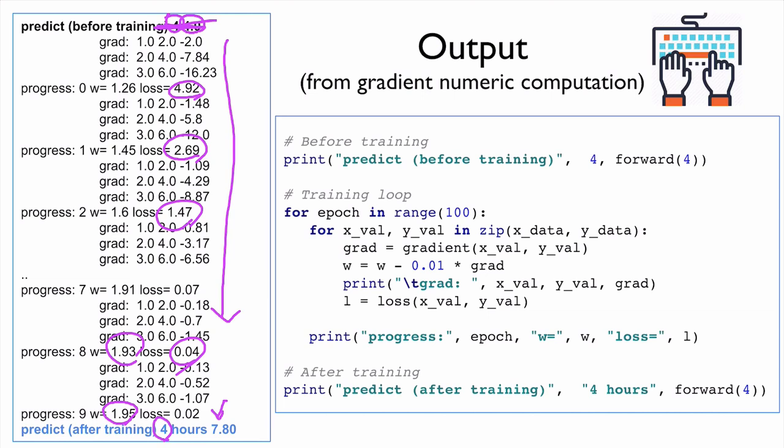So in this lecture, we introduced a very simple algorithm called the gradient descent. But it's very simple, but very efficient and very powerful to automatically identify W, which minimized our loss. Means that we train our models using this algorithm.